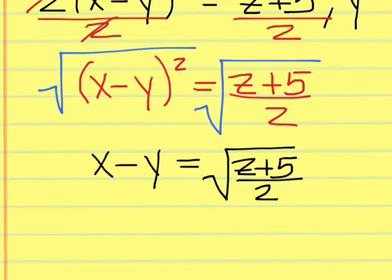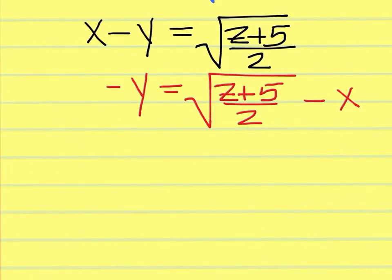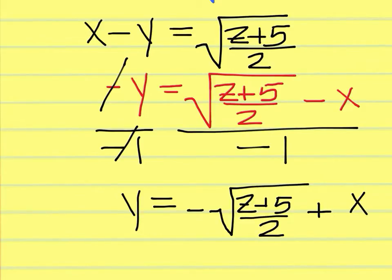Now we need to have y by itself, so we work on moving x. That x is really a plus x, so we're going to leave minus y here and keep what's on the right but make it minus x. Notice the minus x is outside of the square root symbol. The last thing to do to get y by itself is to divide by negative 1 to cancel out that negative sign. When you divide by negative 1 on the right, you're changing the sign of everything — which means you have a negative square root of z plus 5 over 2 and then plus x. When you divide that right side by negative 1 and change the sign of everything, it does not include everything under the square root sign, because that square root symbol protects it. So you just put the negative sign outside the square root symbol and change the sign of the minus.